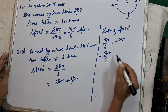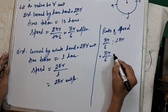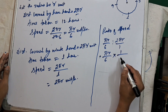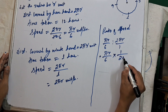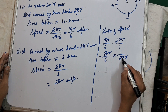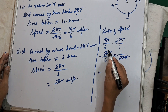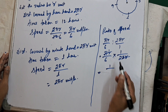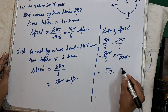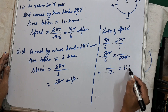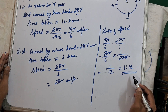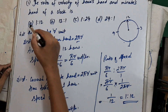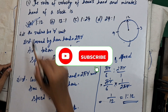Speed of hour hand is πR/6 and speed of minute hand is 2πR. Dividing: (πR/6) ÷ 2πR = 1/(6×2) = 1/12. So the ratio of speed of hour hand to minute hand is 1:12. Option A is the correct option.